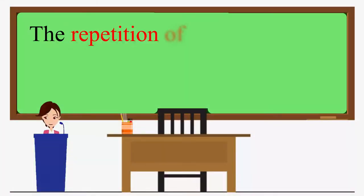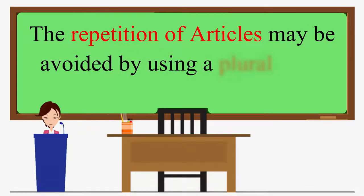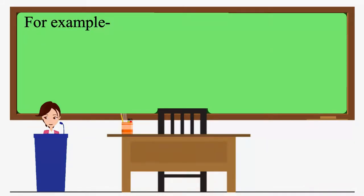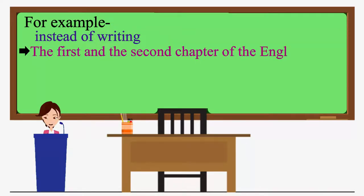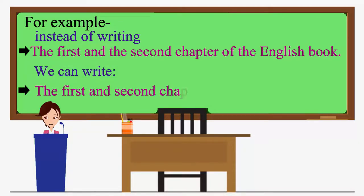The repetition of articles may be avoided by using a plural noun. For example, instead of writing the first and the second chapter of the English book, we can write the first and second chapters of the English book.